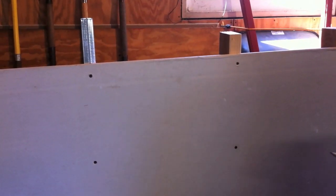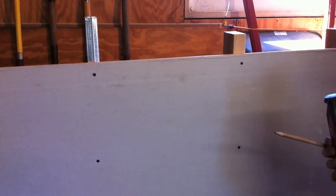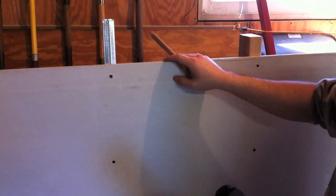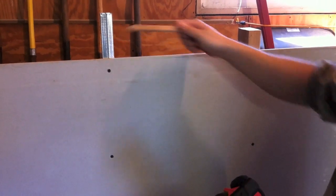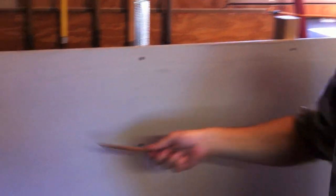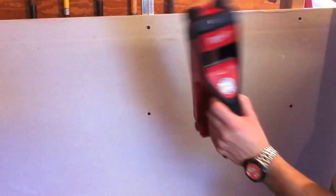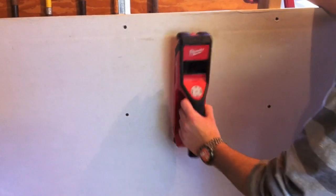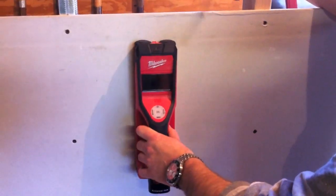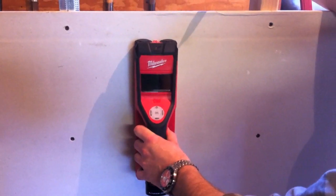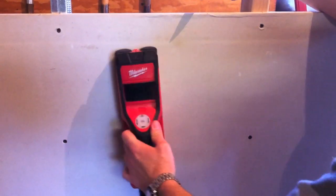We're going to see the Milwaukee 2290-20 cordless M12 sub-scanner in action. Basically, we built a makeshift wall here. We have a metal stud. We have a wood stud. We also have some conduit back there with power going through it, so we can show you the voltage. First thing you're going to want to do is calibrate the unit. You put it on the wall. Now, it will not calibrate on a stud, so if you have problems calibrating it, just move it over a little bit, and it should calibrate.